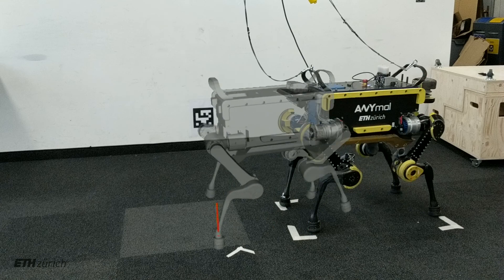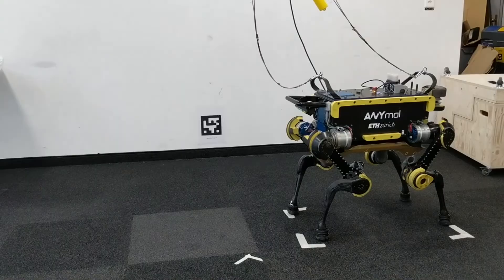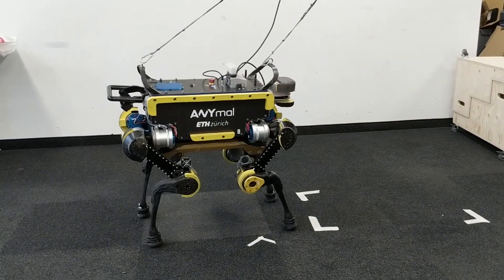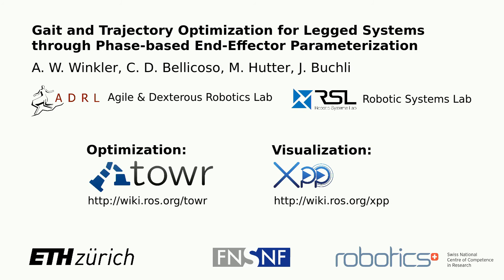By not pre-defining the gait pattern and optimizing over the 6 degree of freedom base motion, the feet and the contact forces simultaneously, this generic algorithm can efficiently generate physically feasible, highly dynamic motion plans for legged robots.